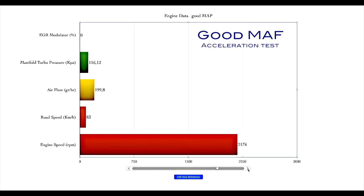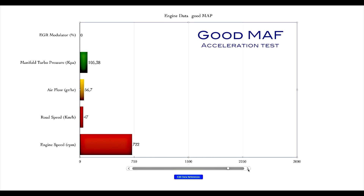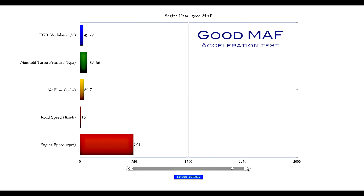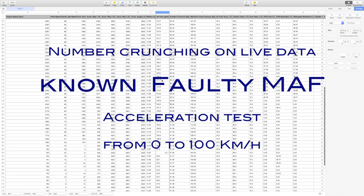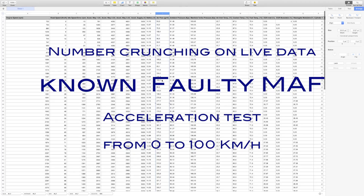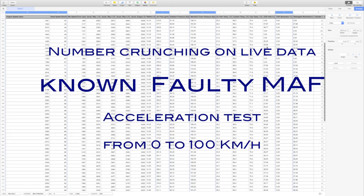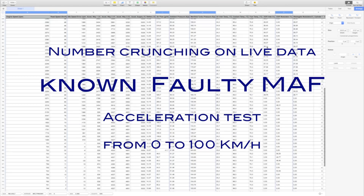The car feels pretty responsive and powerful, so this feels pretty good. This is the kind of behavior you would expect from a normal, good-working MAF and overall a good-working ECU. The next thing we did is we replaced the good MAF with the faulty one, crunched the numbers again, and did the same acceleration test.